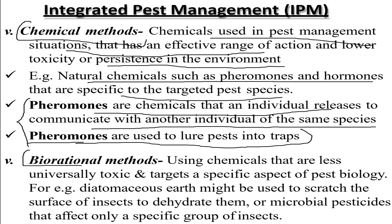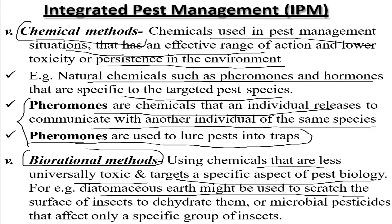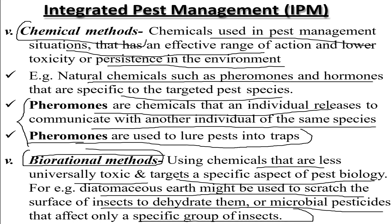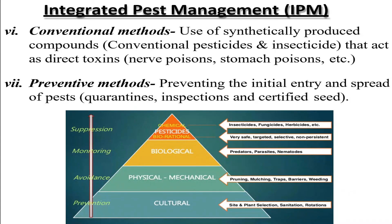The biorational method uses chemicals that are less universally toxic and target specific aspects of pest biology. For example, diatomaceous earth may be used to scratch the surface of insects to dehydrate them, or biological pesticides that affect only a specific group of insects. This is a modification of the chemical method used for reducing pest growth.